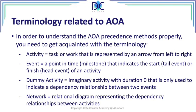In activity on arrow we also have what we call dummy activities. A dummy activity is an activity with duration zero — it's an imaginary activity. It's not real and is only used to indicate a dependency relationship between two events. There are some limitations in the activity on arrow technique, and it's only possible to introduce all the necessary dependencies when we are using dummy activities.